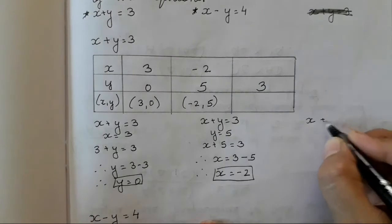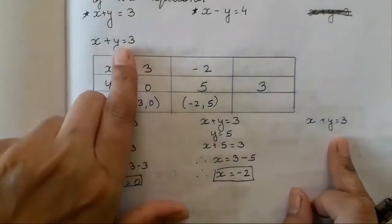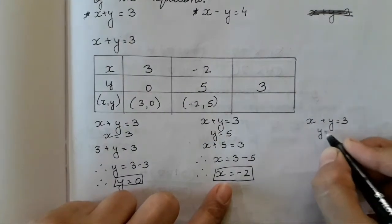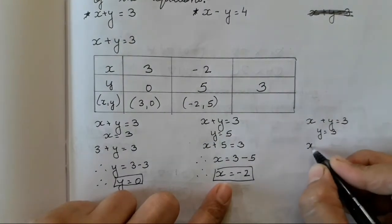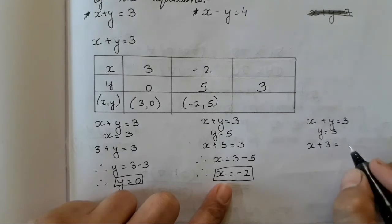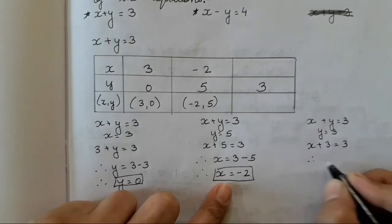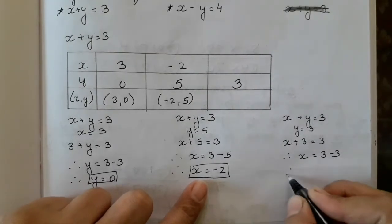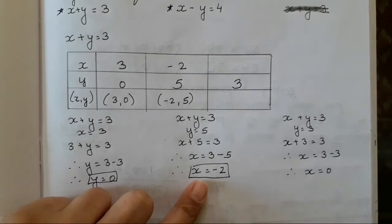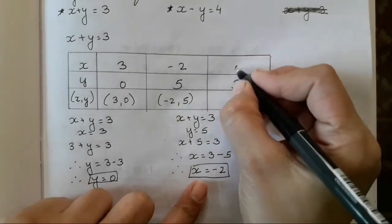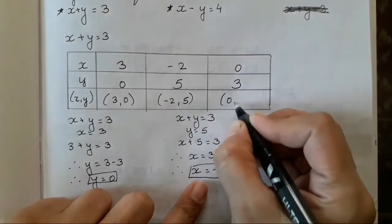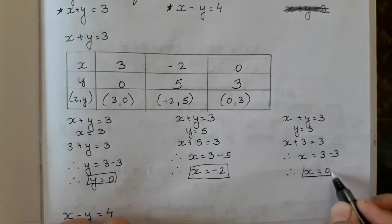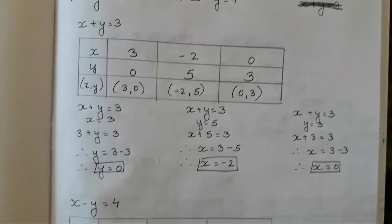The third entry uses the same equation x plus y is equal to 3, where y is given as 3. So x plus 3 is equal to 3, therefore x is equal to 3 minus 3, therefore x is equal to 0. So the pair is (0, 3). In this way you all have to fill in the blanks.